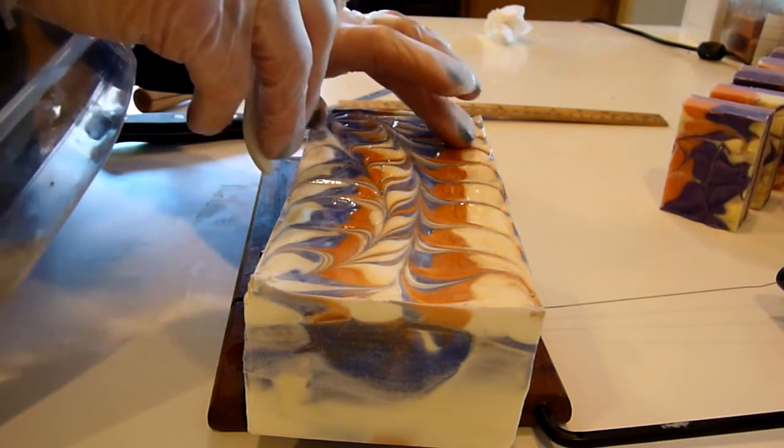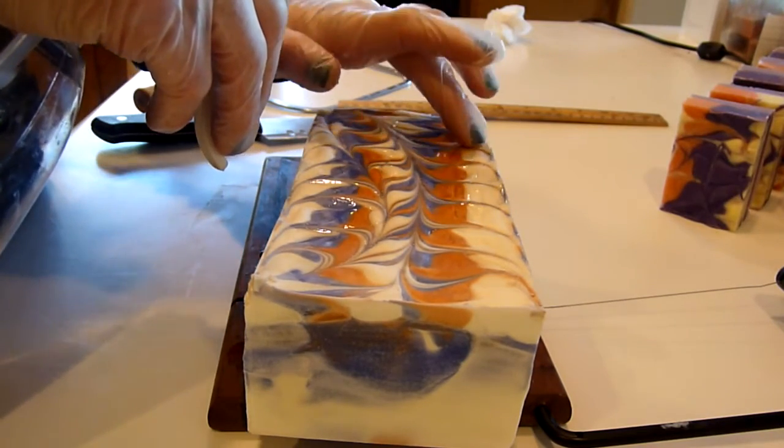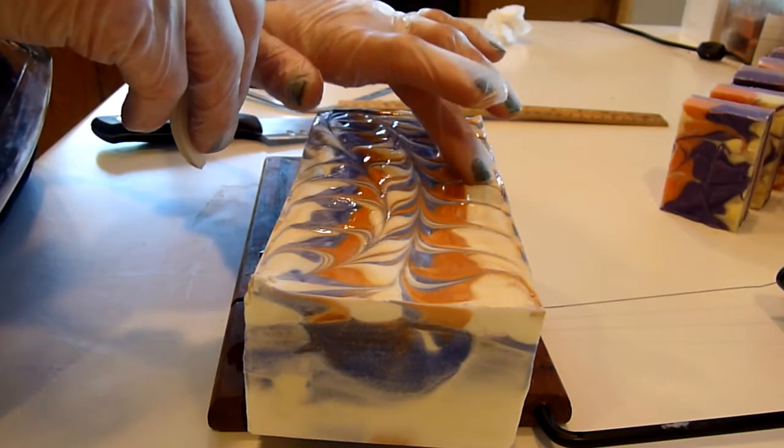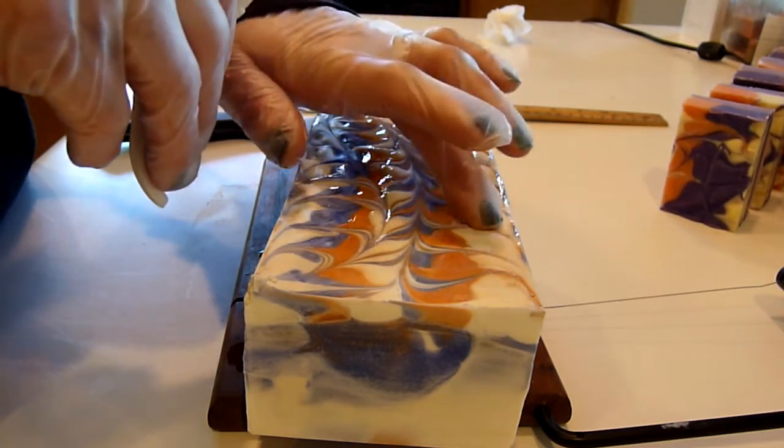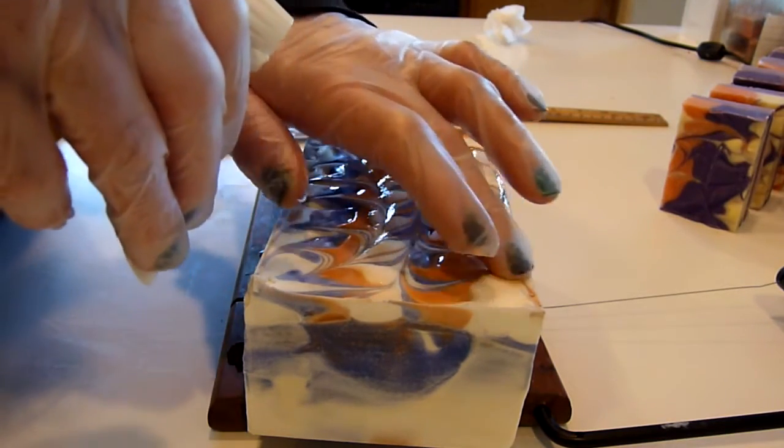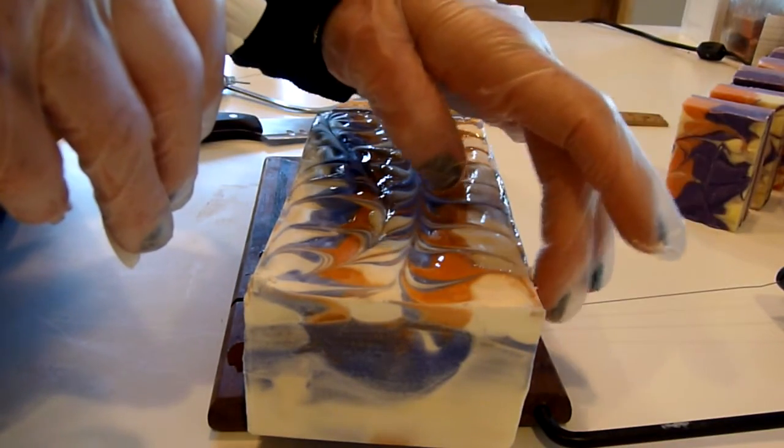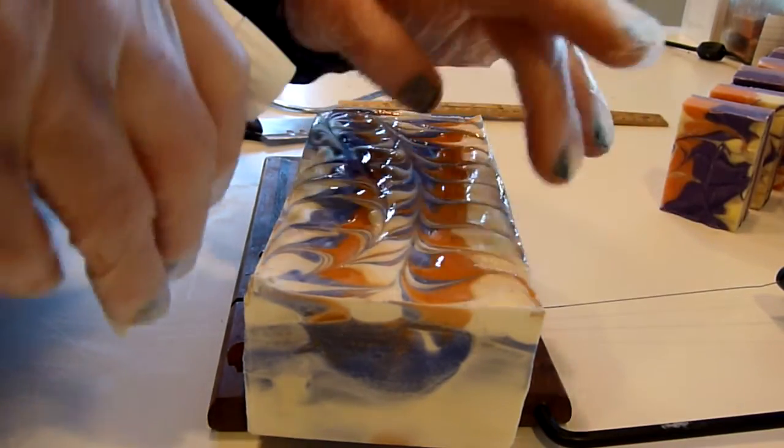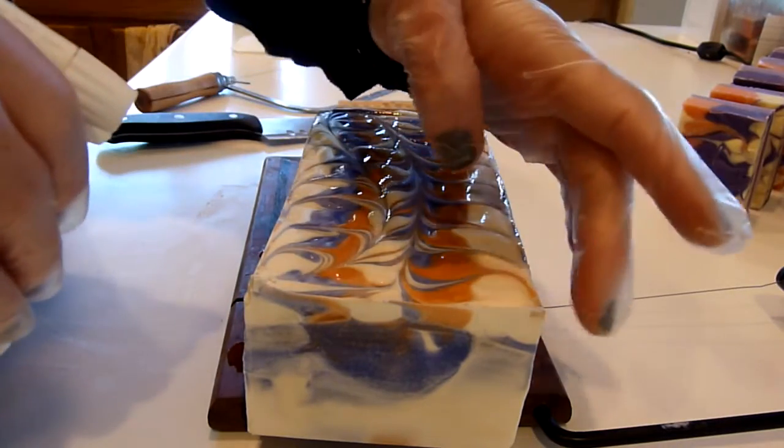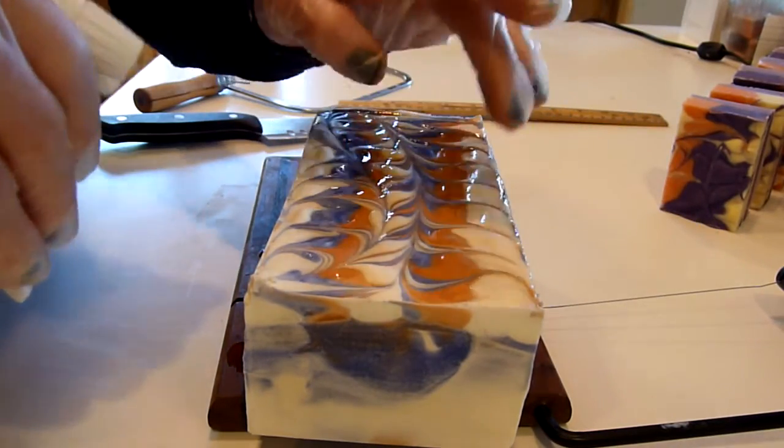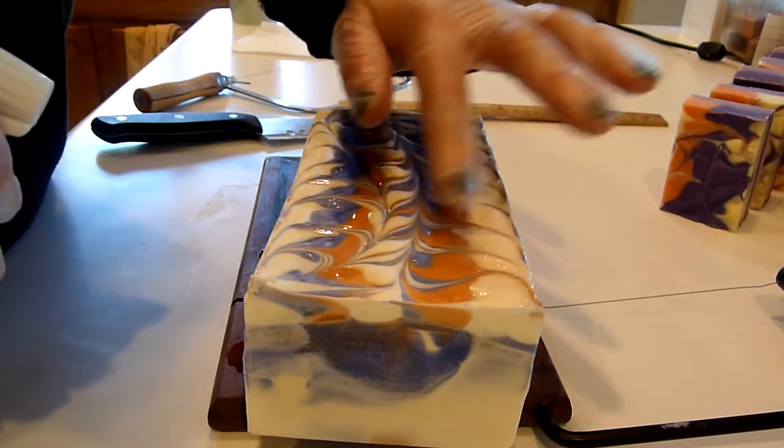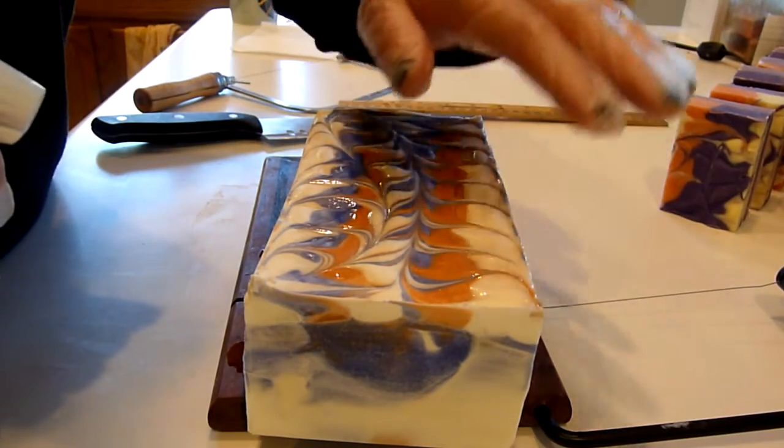And I had a couple questions about soda ash, actually. And soda ash, for me, happens. I can avoid it a lot of the time by spraying my tops liberally. I do spray a lot of alcohol on the tops after I pour and before I set them aside for the night.